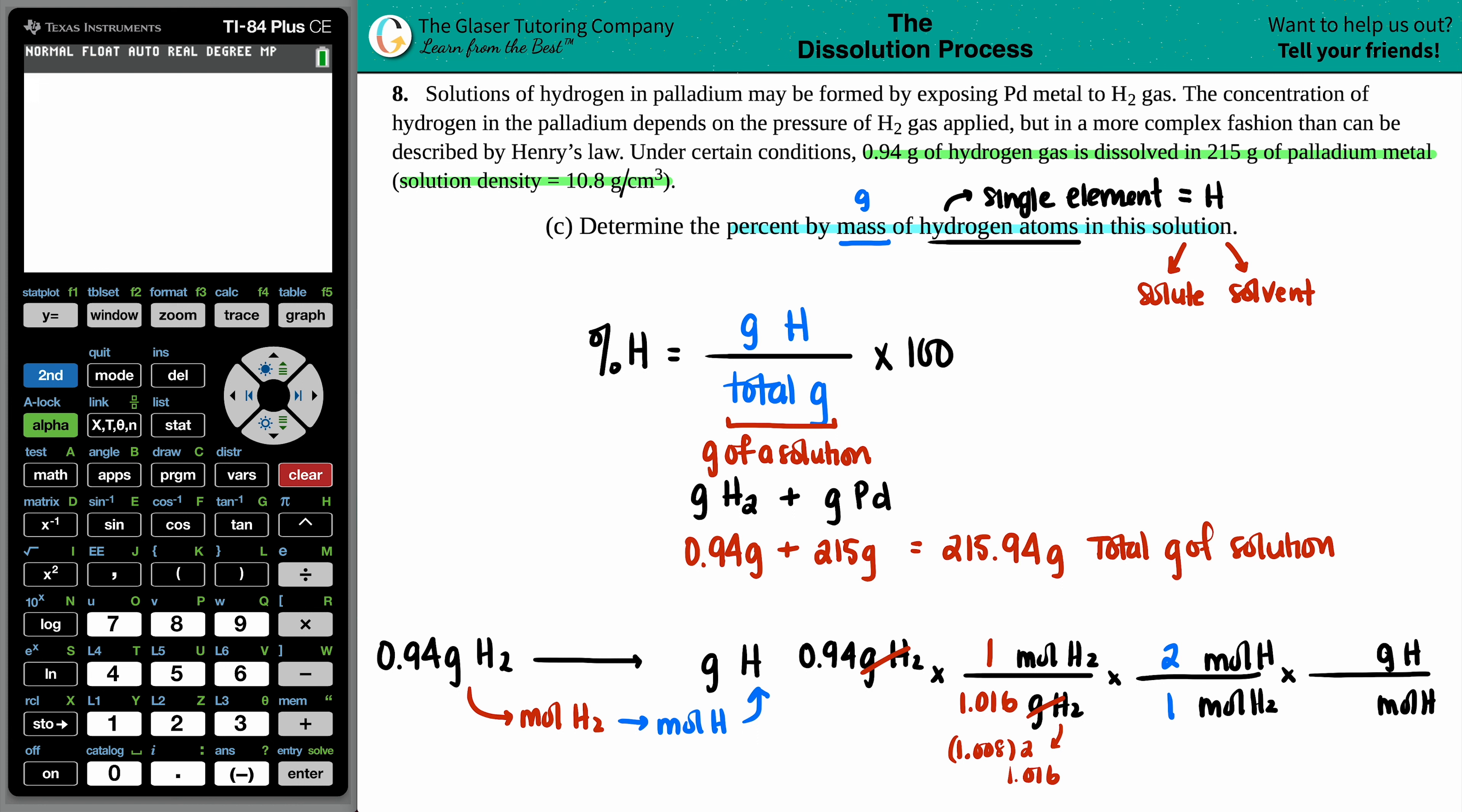Moles of H on the bottom, grams of H up top. And back to the periodic table, one mole of H equals the 1.008. And I just realized that this was supposed to be 2.016. Did anybody catch that? Is anybody screaming at me? I heard you.